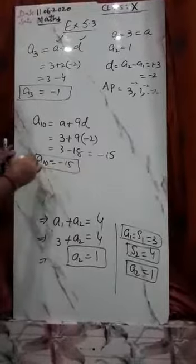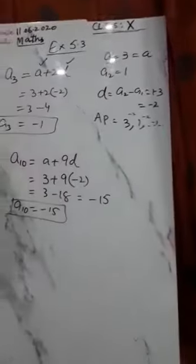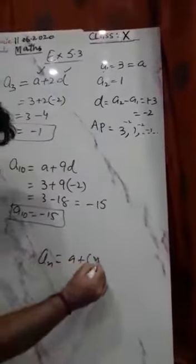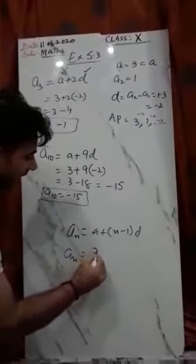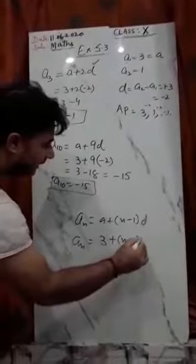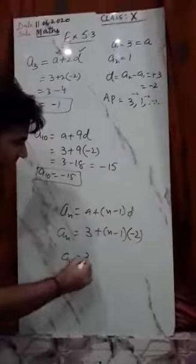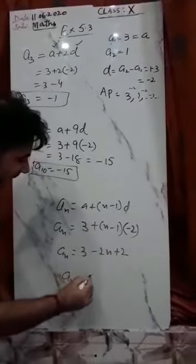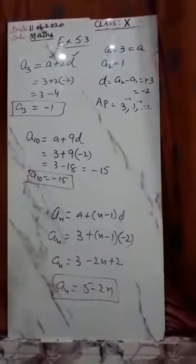Now we find the nth term. nth term: An = A + (n-1)×D. So An = 3 + (n-1)×(-2) = 3 - 2n + 2 = 5 - 2n. So the nth term is 5 - 2n. Thank you.